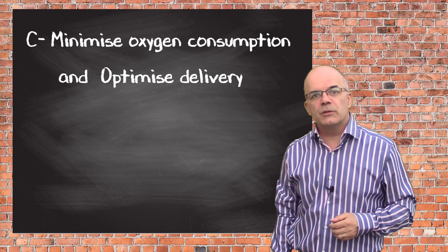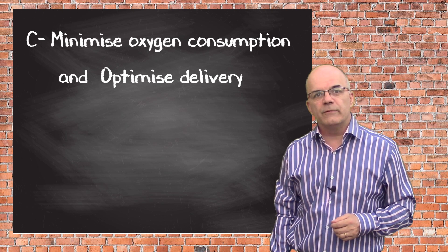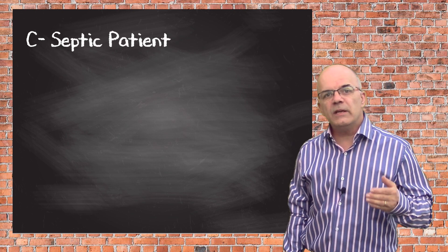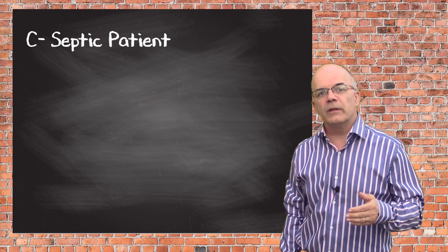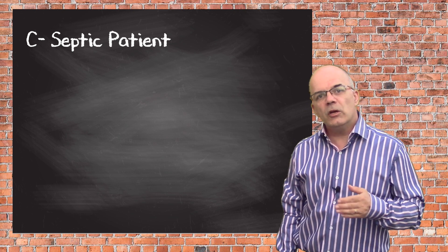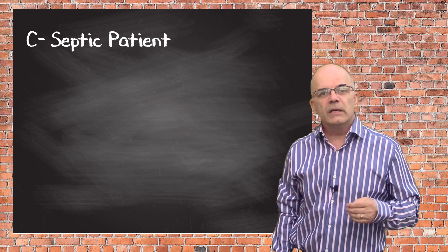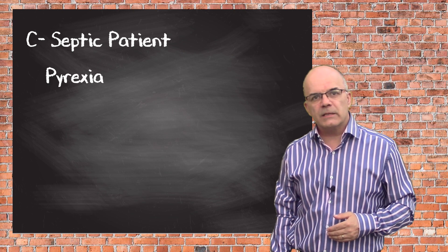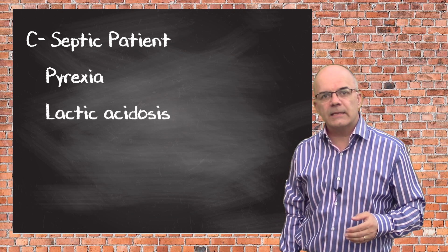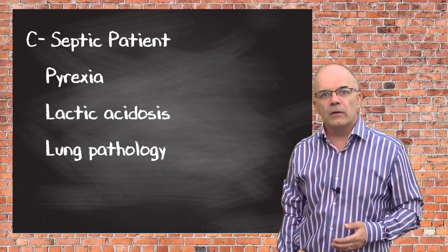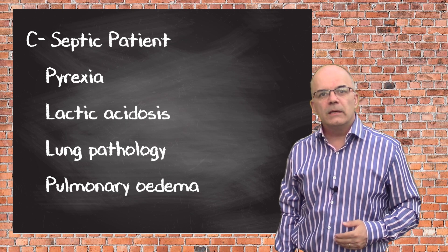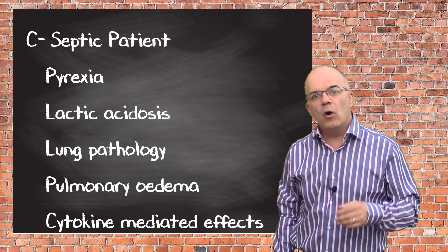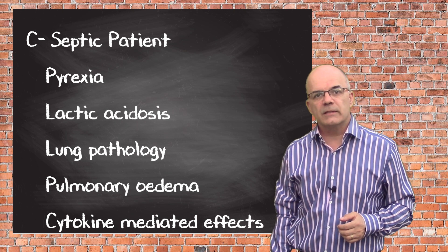Minimise oxygen consumption and optimise oxygen delivery, e.g. in sepsis. The severely septic patient will often be breathing quite hard. The earliest clinical sign of sepsis is often a rapid respiratory rate. This may be driven by pyrexia, lactic acidosis, local lung pathology, pulmonary oedema, cytokine-mediated effects on the respiratory control centre, or a combination of several of these factors.